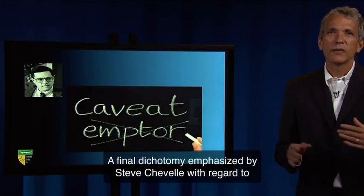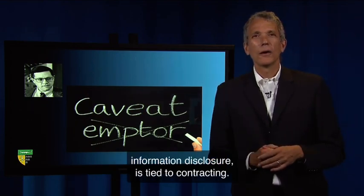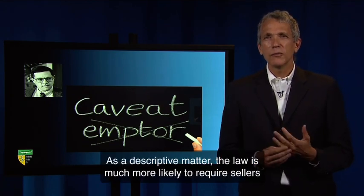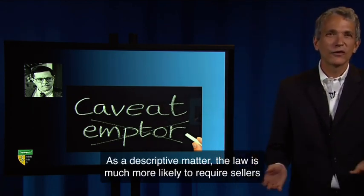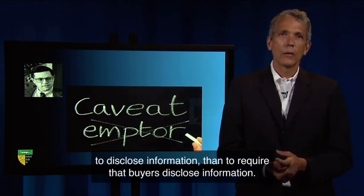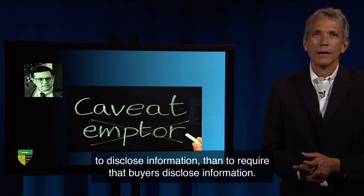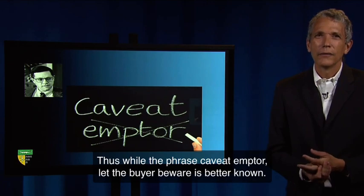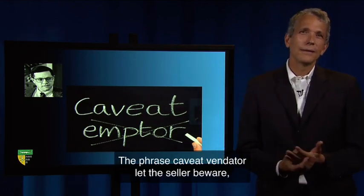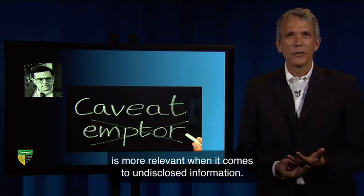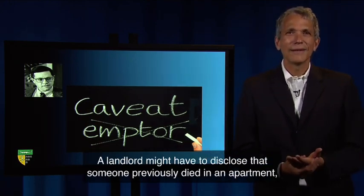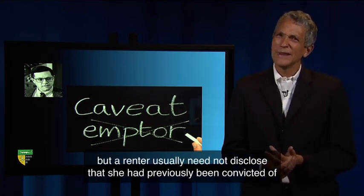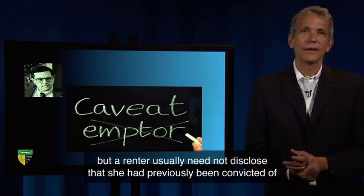A final dichotomy, emphasized by Steve Chevelle with regard to information disclosure, is tied to contracting. As a descriptive matter, the law is much more likely to require sellers to disclose information than to require that buyers disclose information. Thus, while the phrase caveat emptor — let the buyer beware — is better known, the phrase caveat venditor — let the seller beware — is more relevant when it comes to undisclosed information. A landlord might have to disclose that someone previously died in an apartment, but a renter usually need not disclose that she had previously been convicted of murder.